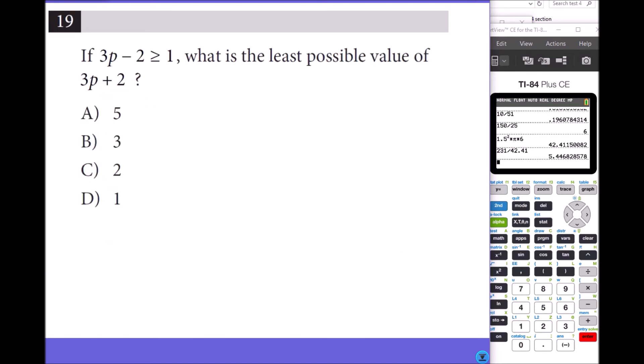Number 19: If 3P minus 2 is greater than or equal to 1, what is the least possible value of 3P plus 2? So 3P minus 2 is greater than or equal to 1. To make it 3P plus 2, you're adding 4, right? So you add 4, so it has to be greater than or equal to 5. So number 19 is 5.